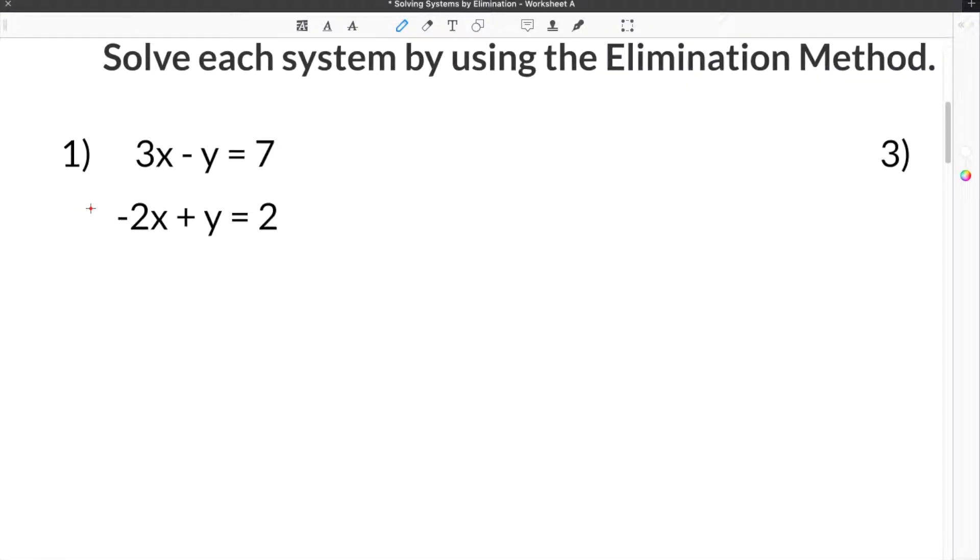Here's number one on our solving systems of equations by elimination worksheet. This problem gives us two separate equations in our system. The first equation is 3x minus y equals 7, and the second equation is negative 2x plus y equals 2.